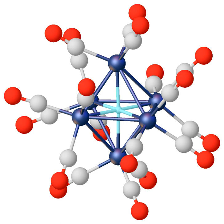Free hydride anions exist only under extreme conditions and are not invoked for homogeneous solution. Instead, many compounds have hydrogen centers with hydridic character. Aside from electride, the hydride ion is the simplest possible anion, consisting of two electrons and a proton. Hydrogen has a relatively low electron affinity, 72.77 kJ per mole, and reacts exothermically with protons as a powerful Lewis base.